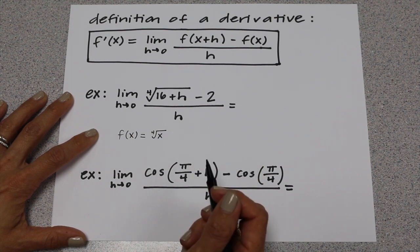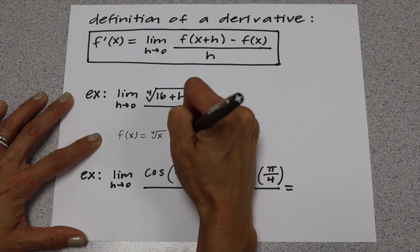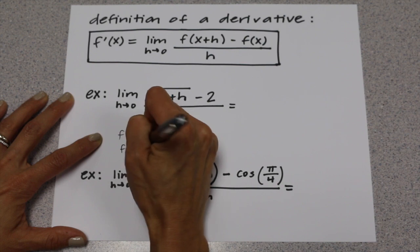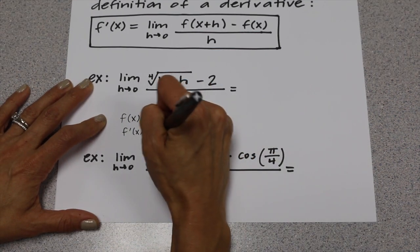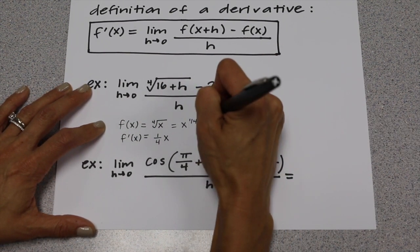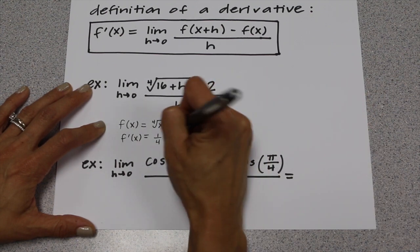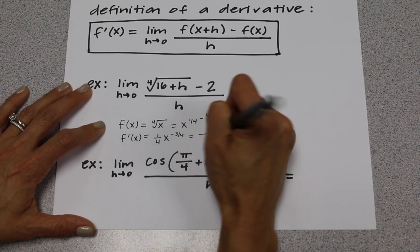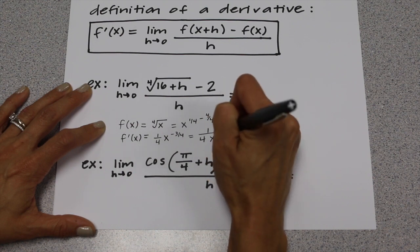Now we're going to take the derivative of f. To do that, first rewrite it as x to the 1/4. Then take the derivative using the power rule: bring the power down to the front and subtract 1 from the exponent. Subtracting 1 is the same as subtracting 4/4, so you get negative 3/4. Rewriting, that gives us 1 over 4 times x to the 3/4.